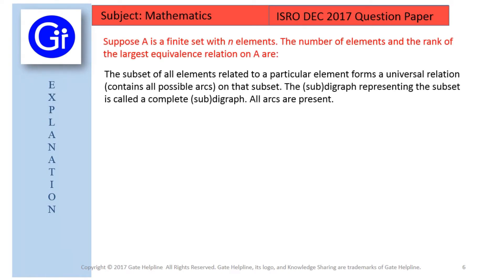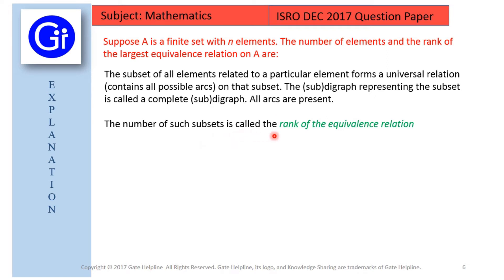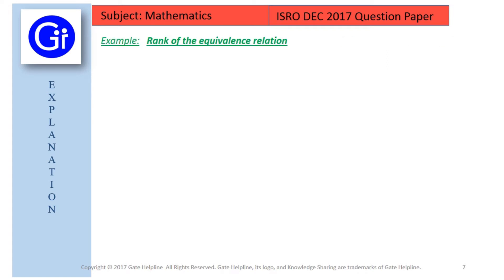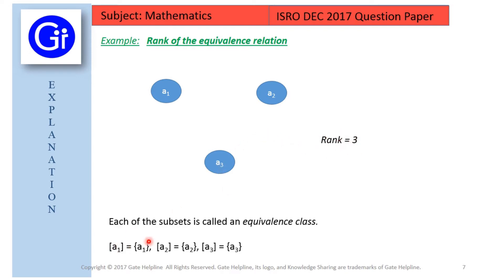In the second case, the subset of all elements related to a particular element forms a universal relation and contains all possible arcs on that subset. The sub-digraph representing the subset is called a complete sub-digraph where all arcs are present. The number of such subsets is called the rank of the equivalence relation. Each subset is called an equivalence class, and the number of equivalence classes equals the rank of the equivalence relation.